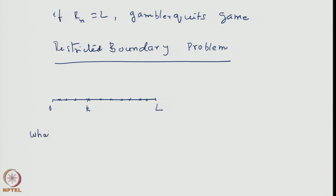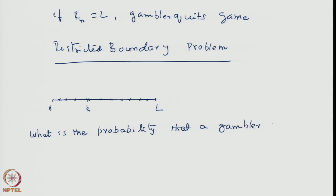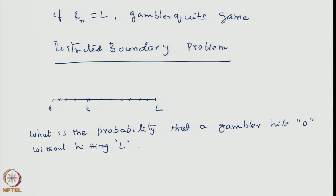What is the probability that the gambler hits 0 — that is, gets ruined — without hitting L? Once he hits L, the game is supposed to stop. One can similarly ask the vice versa: what is the probability of the gambler hitting L without being broke? Once he is broke, the game is over and not restarted.